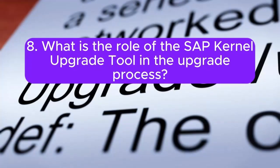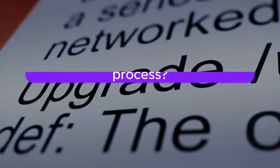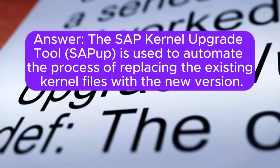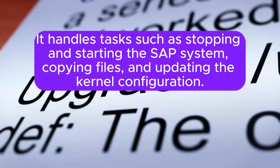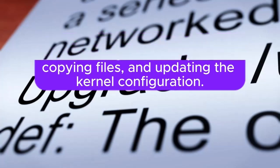8. What is the role of the SAP kernel upgrade tool in the upgrade process? The SAP kernel upgrade tool SAPUP is used to automate the process of replacing the existing kernel files with the new version. It handles tasks such as stopping and starting the SAP system, copying files, and updating the kernel configuration.